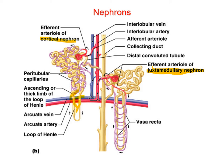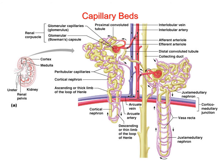What that diagram leaves out is the peritubular capillaries that are around the tubules. This more accurate diagram shows the specialized peritubular capillaries called the vasa recta that surround the loop of Henle for juxtamedullary nephrons.